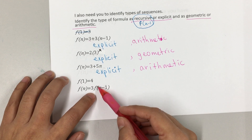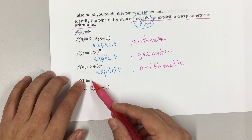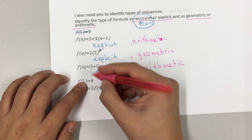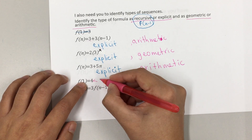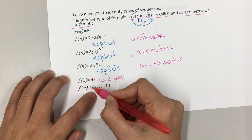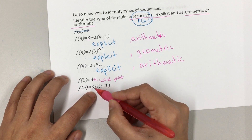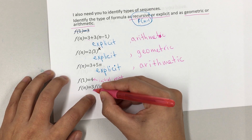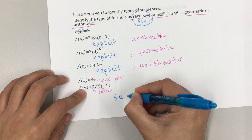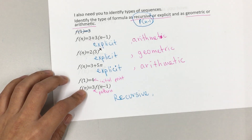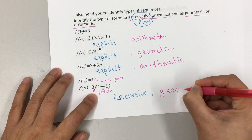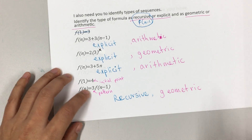For this one, we do have f(n − 1) and we have the initial point — remember the recursive formula has two parts: f(1) equals the initial point, and then f(n) = f(n − 1) with the pattern next to it. So this is definitely recursive. Since it involves multiplication, we call it a geometric sequence.